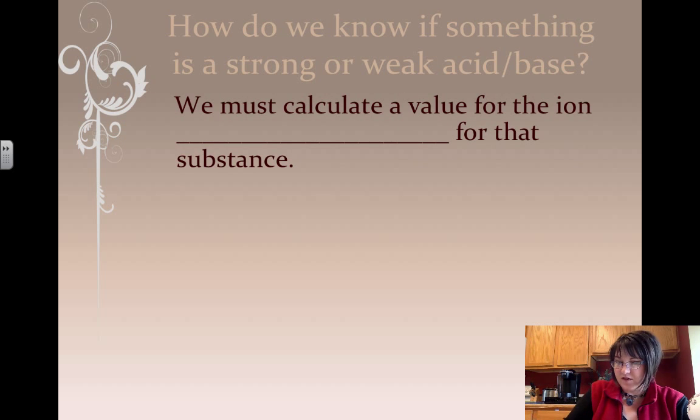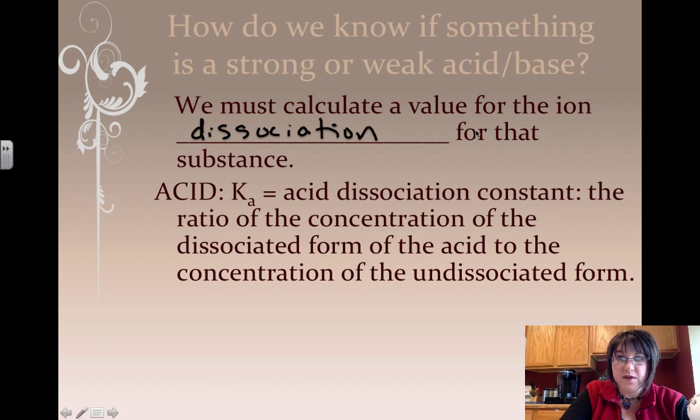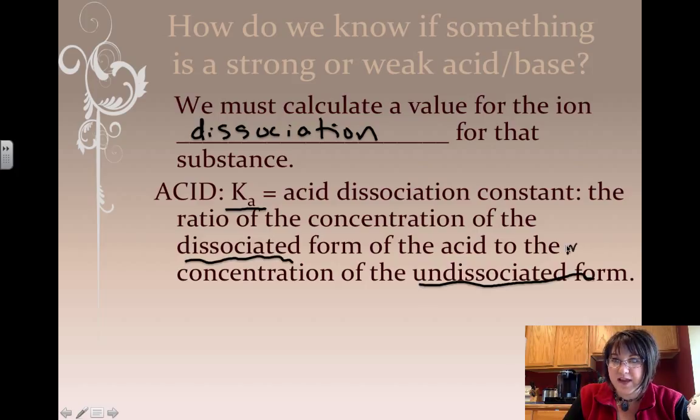To know if something is a strong acid or a weak acid, or a strong base or a weak base, we have to calculate the value for the ion dissociation for that substance. What we're really talking about is how many particles of ions, charged particles, do we get when that stuff gets in the water. So the acid has a value called Ka, which is the acid dissociation constant. The ratio of the concentration of the dissociated form of the acid to the undissociated form or its molecular form, when it's all bonded together still.